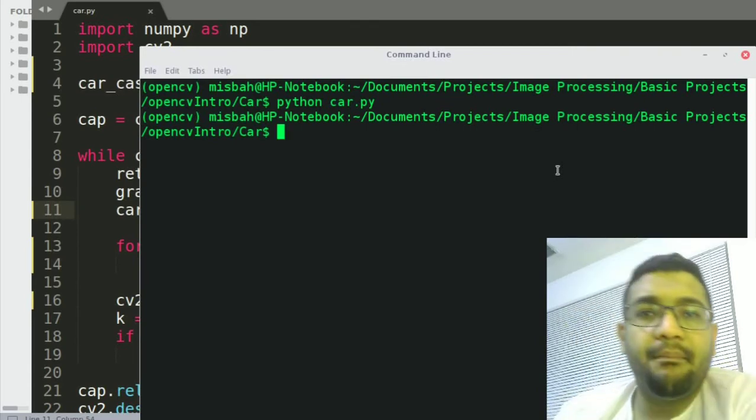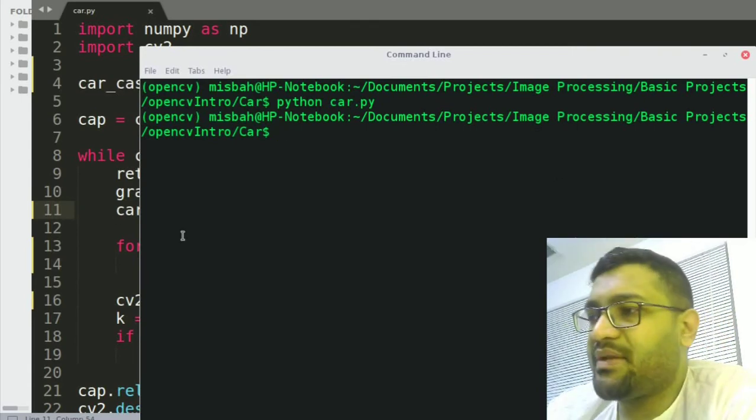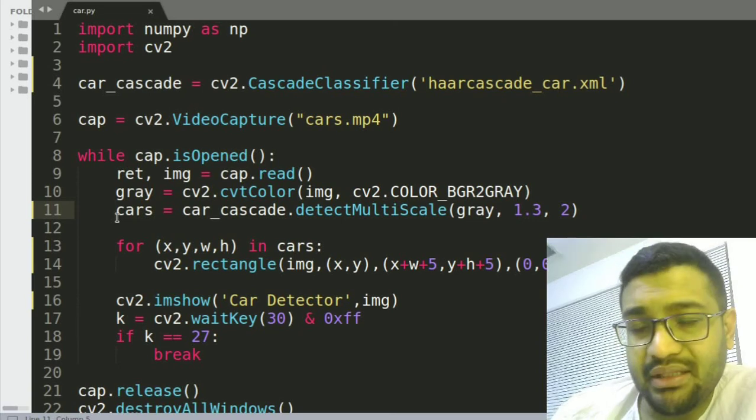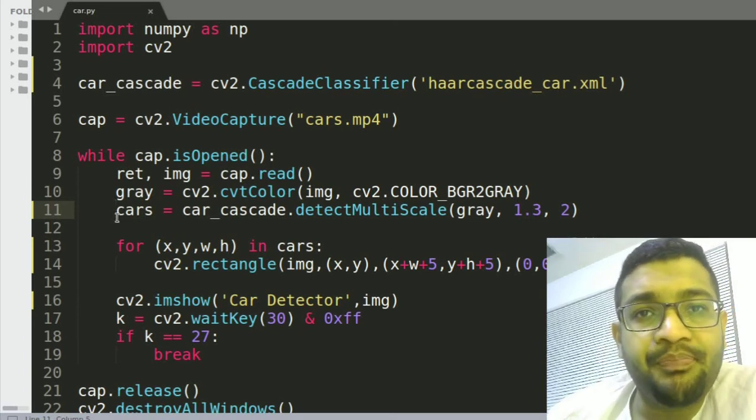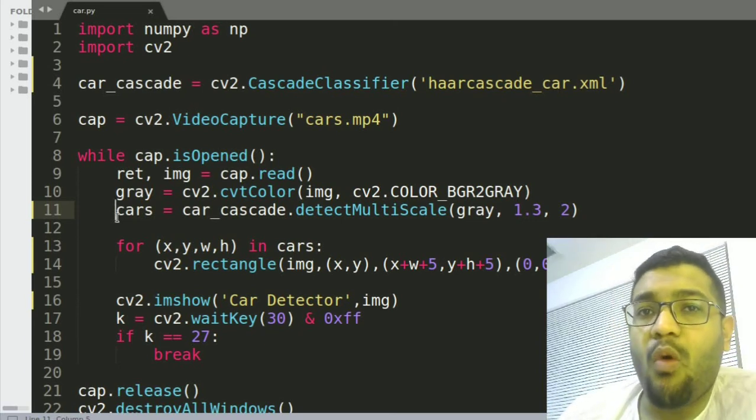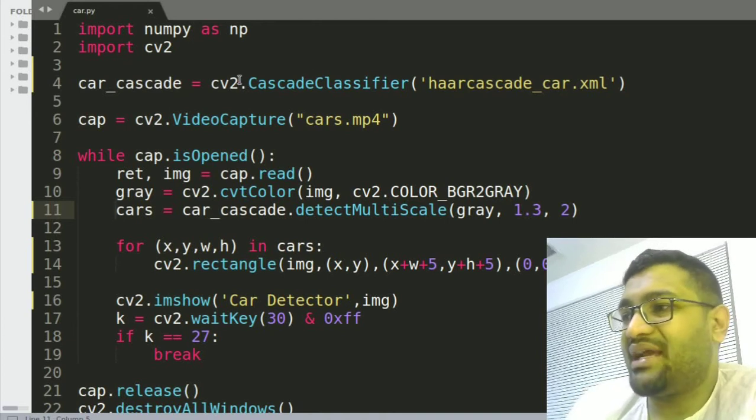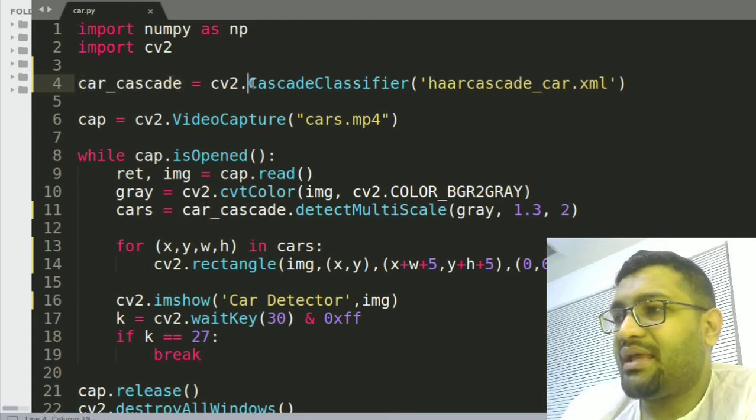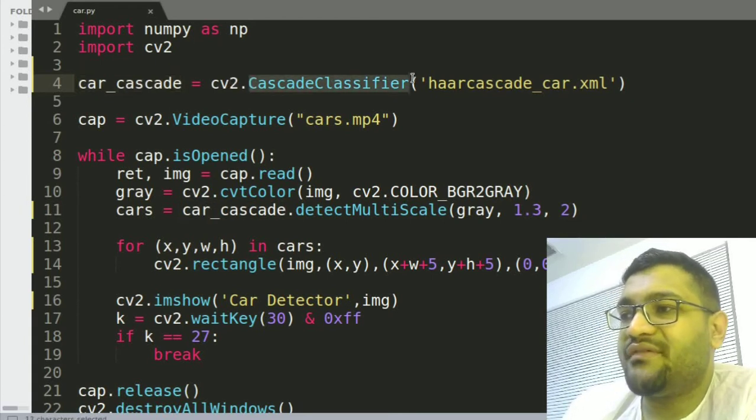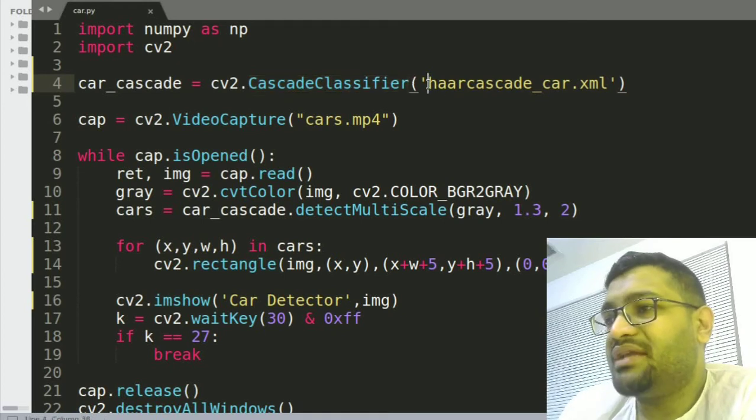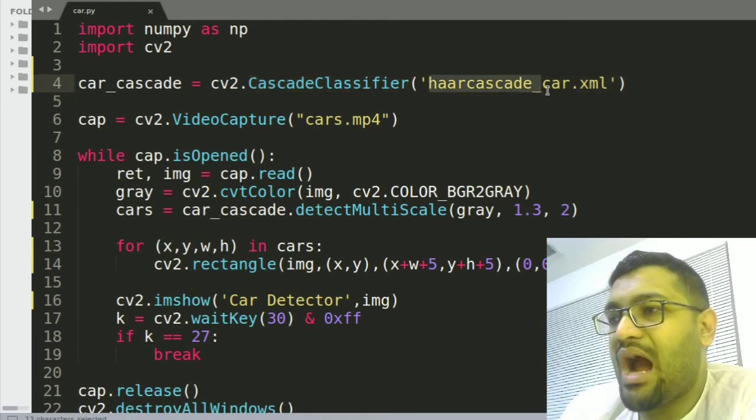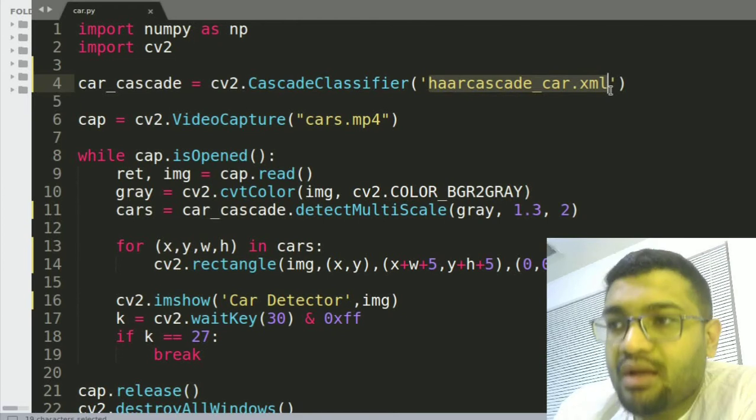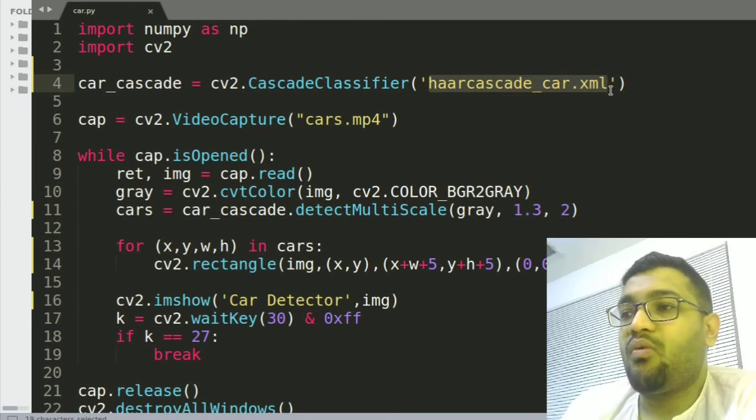So before I go into the program, before I explain what it is, I do want to show you—and this is the program here right, open up—I want to explain you what is Haar cascades. So you will see here I'm defining something called car cascade and I'm using a function from OpenCV called cascade classifier and it's using this file Haar cascades car.xml. Now what is this?